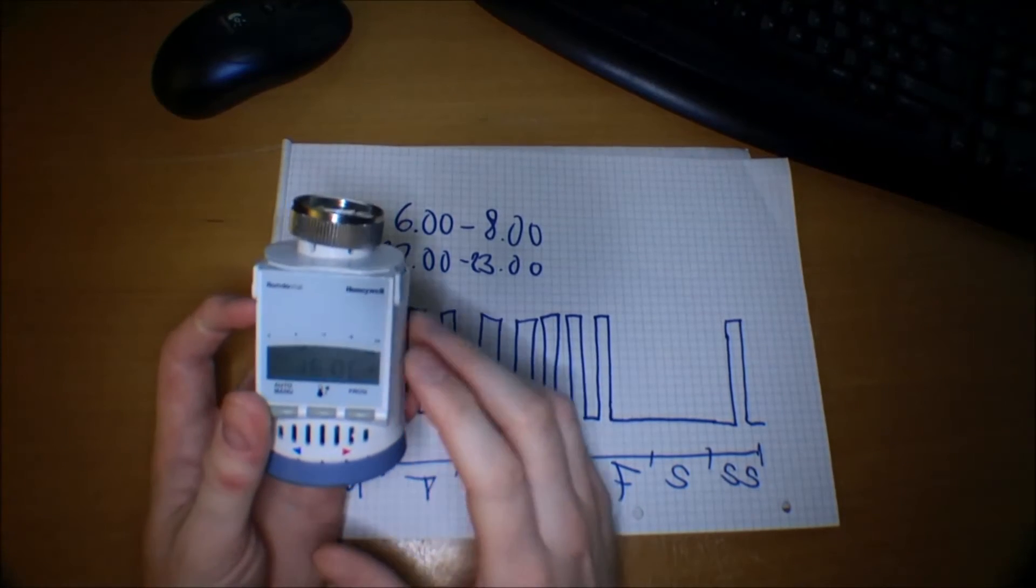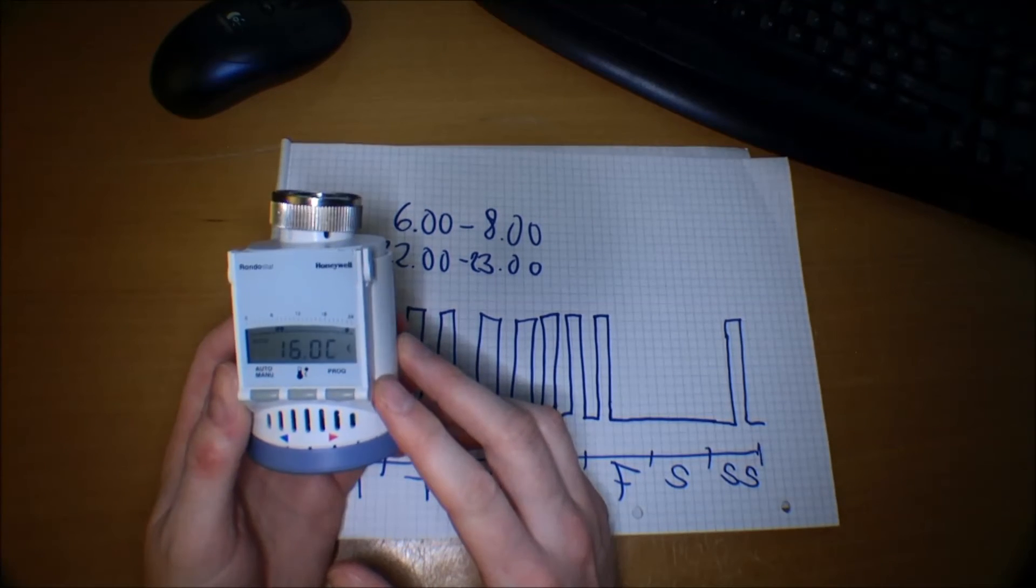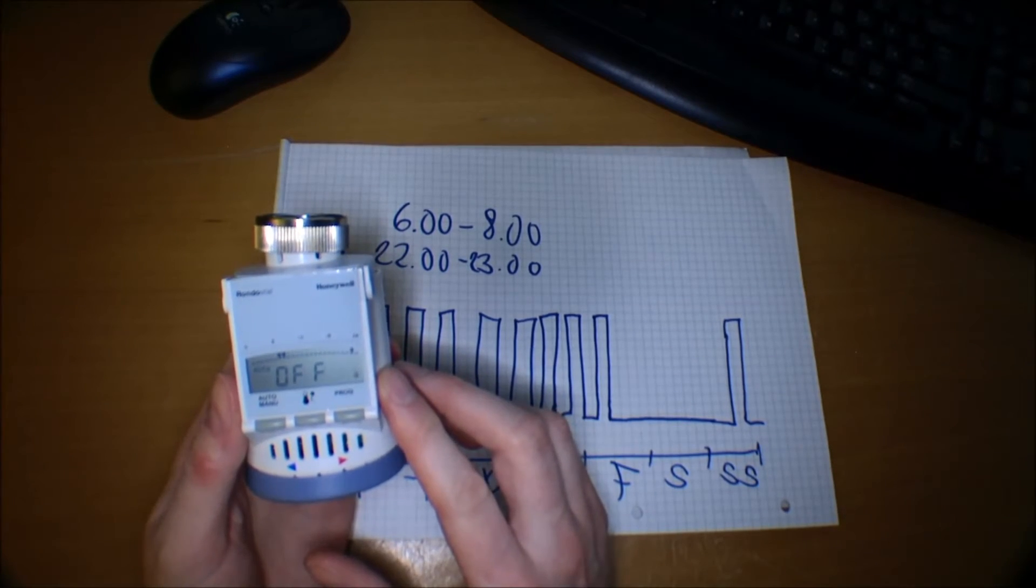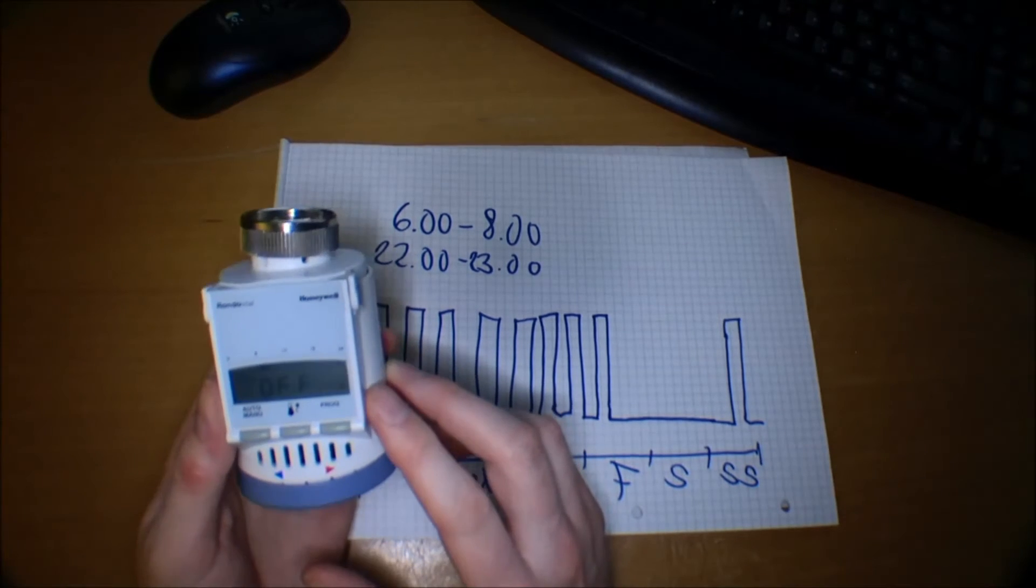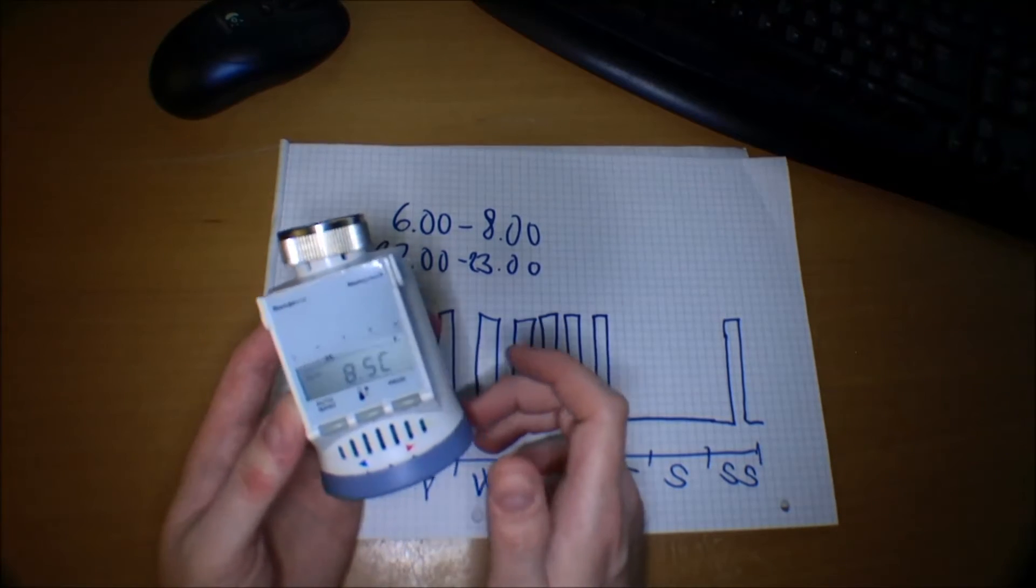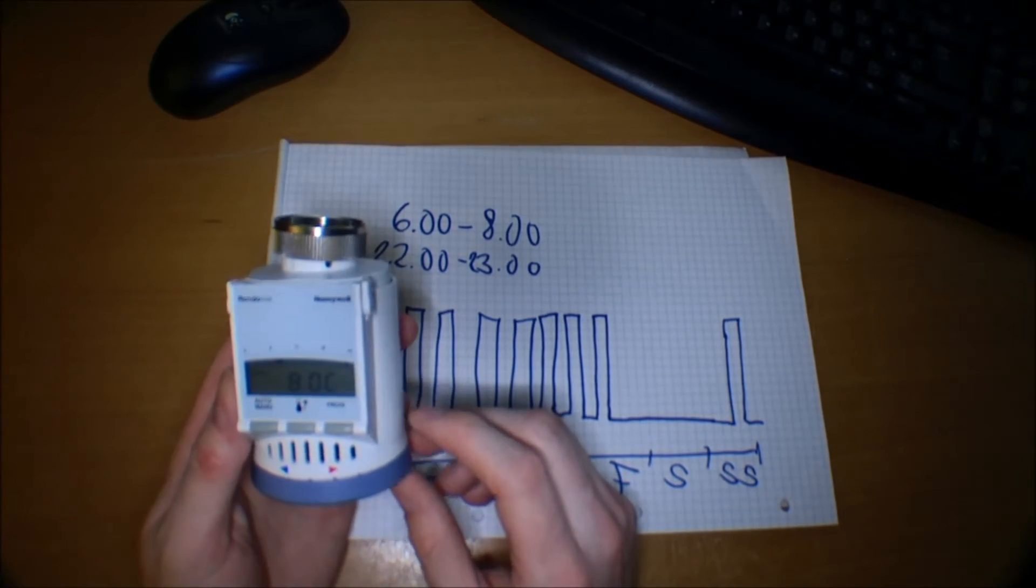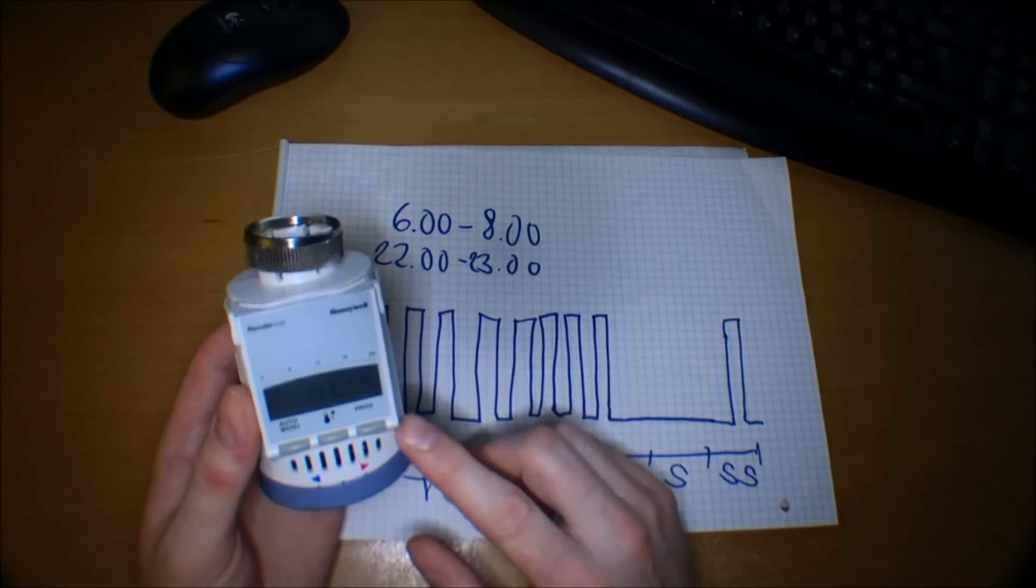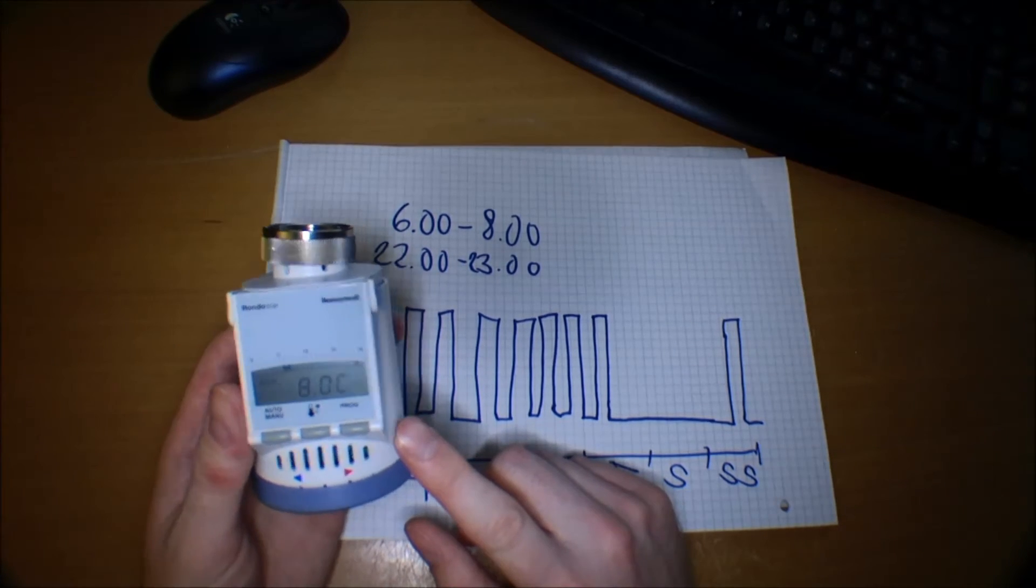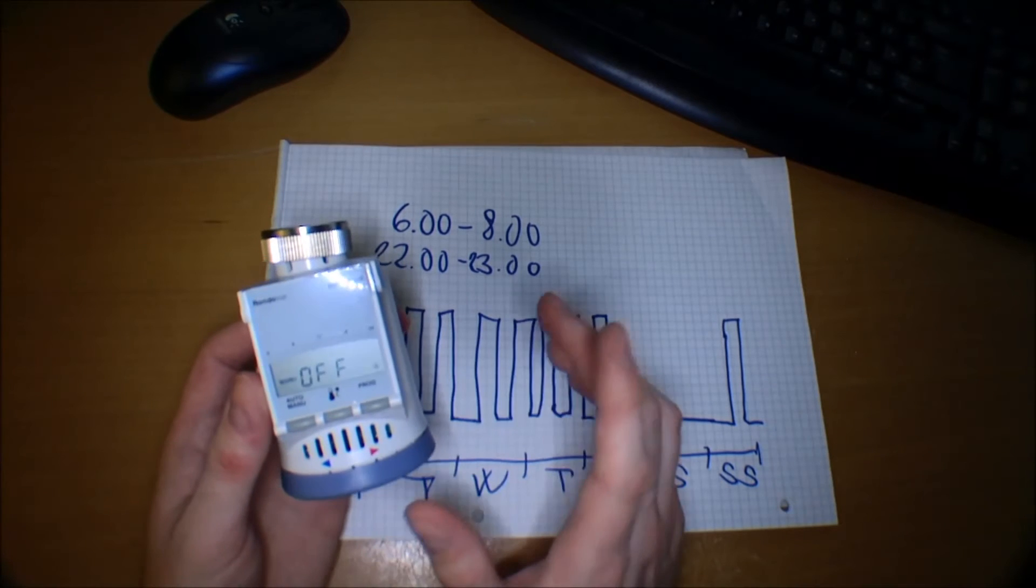The Honeywell Rondostat thermostat has a frost protection as well. Even though the thermostat might be off, if the temperature gets below 4 degrees it will turn on until the temperature is back over 6 degrees again. So it will keep the system free of frost and it will do this even if it's set to off. It doesn't matter what mode it's in, it will keep the house free of frost.